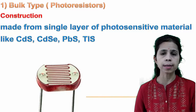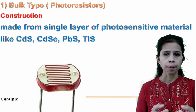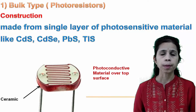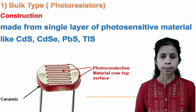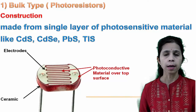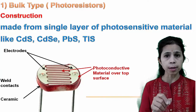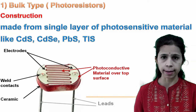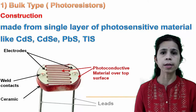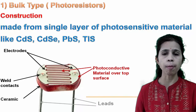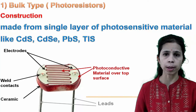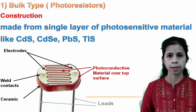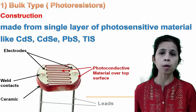A photoconductive cell generally consists of a ceramic substrate, a thin layer of photosensitive material, and metallic electrodes to connect the cell to an external circuit. Over the ceramic substrate, a thin layer of photosensitive material is deposited in a zigzag manner, separating two metal-coated areas which act as electrodes arranged in an interdigital pattern to maximize contact area with the photosensitive material, achieving a high ratio of dark to light resistance.